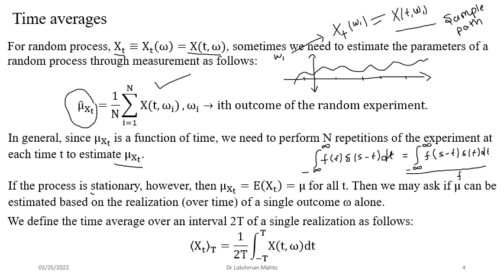The actual property of the Dirac delta says that you have to see where it is centered, and the integral takes the value of the corresponding function at that center. Due to that it comes out as f(s). This concept helps to sample out from a signal — s is a fixed number, so this is the sampling approach from a continuous signal.